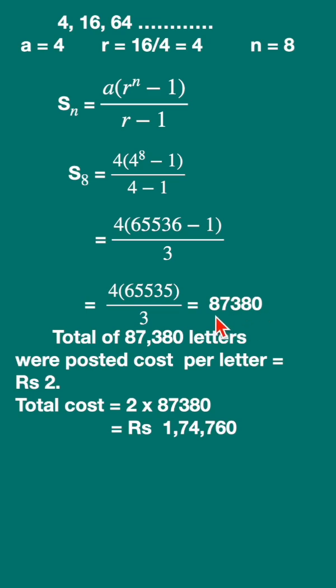Total letters is 87,380. Now cost for each letter is rupees 2, so for this many letters, 2 into you have to multiply.